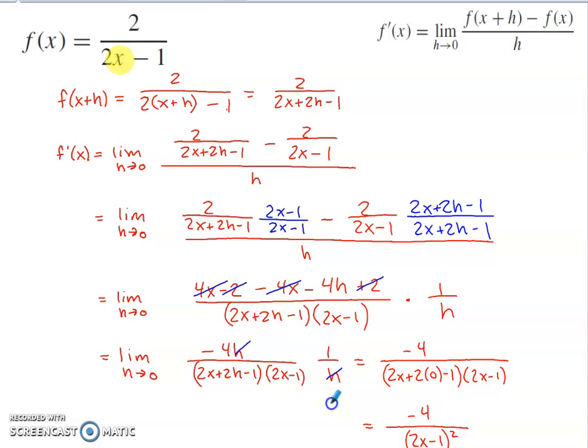If I put 0 in place of the only h that's left, which is in this position within the denominator, I get negative 4 in my numerator, 2x plus 0, so 2x minus 1 in that set of parentheses, 2x minus 1 in that set of parentheses. If you recognize that that denominator is a set of parentheses times itself, it can be re-represented as that set of parentheses squared. Here is the derivative.